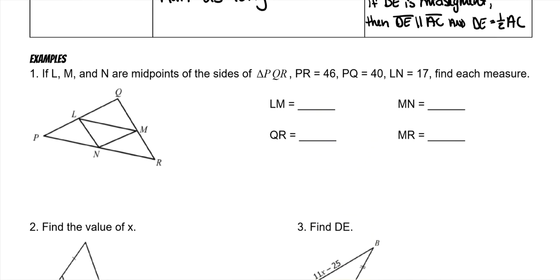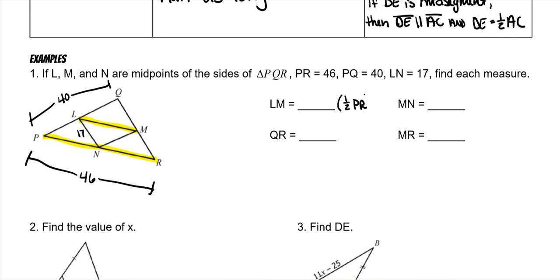In this example, L, M, and N are midpoints of the sides of triangle PQR. PR is 46, PQ is 40, and LN is 17. Find each measure. So for LM, LM is going to be parallel with that side, and LM is going to be half of PR, which means it's going to be half of 46, which is 23.